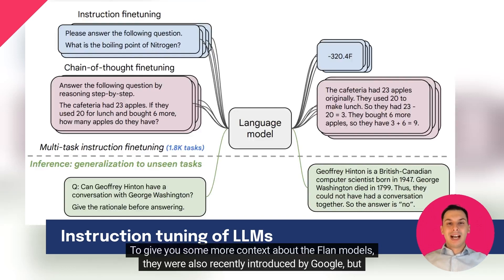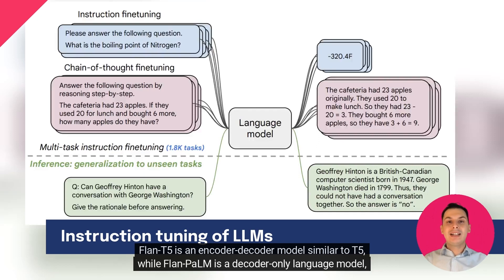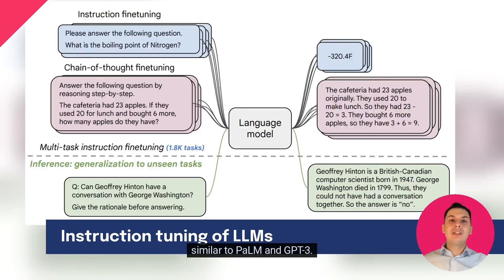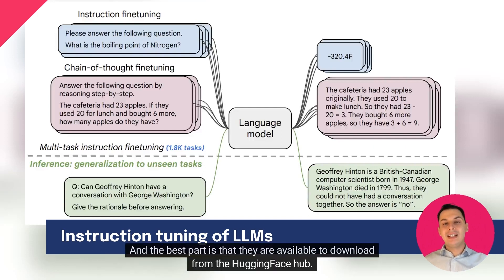To give you some more context about the Flan models, they were also recently introduced by Google, but in another paper. There are two main model types. Flan T5 is an encoder-decoder model similar to T5, while Flan PaLM is a decoder-only language model, similar to PaLM and GPT-3. Flan-based models achieve higher performance than previous model iterations for the same number of parameters, and the best part is that they are available to download from the Hugging Face Hub.